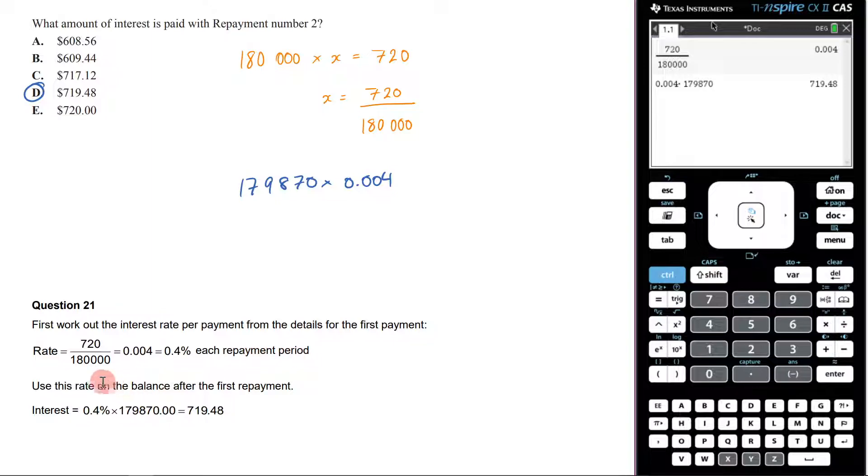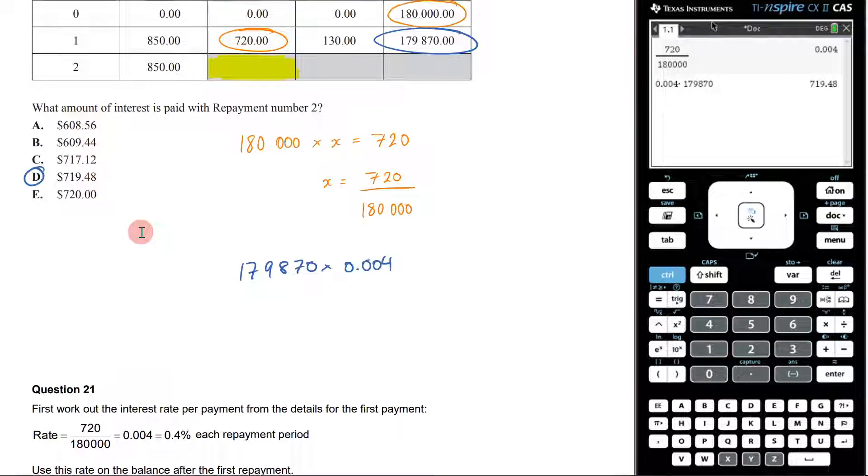Use this rate on the balance after the first repayment. So interest is 0.4% or 0.004 times by that to get 719.48, which we got. Hopefully that has made sense.